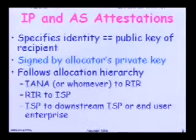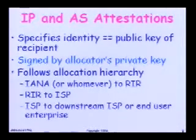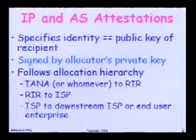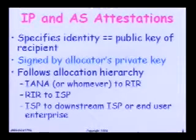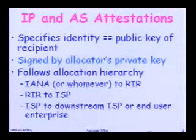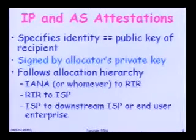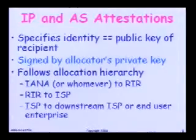Let's be clear about what we mean by the attestations. It specifies the identity — the public key in a public-private key pair — of the recipient of address space or an AS. It's signed by whoever gives it to them. So the RIR gives me a slash 16, and I give a slash 24, et cetera. It follows the allocation hierarchy naturally, because IANA does address space, the RIRs allocate to ISPs, ISPs to downstream ISPs, and end-user enterprises. There's a natural hierarchy here, and there happens to be one for ASs too.